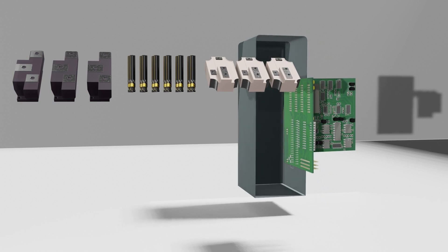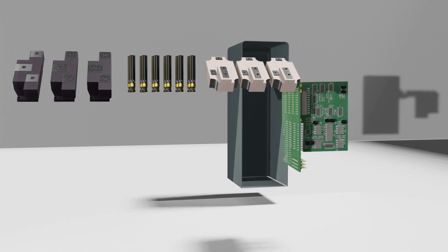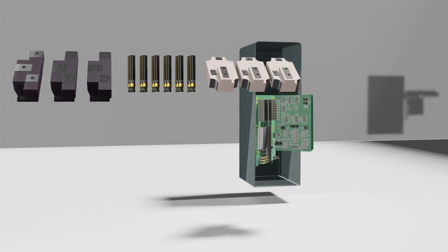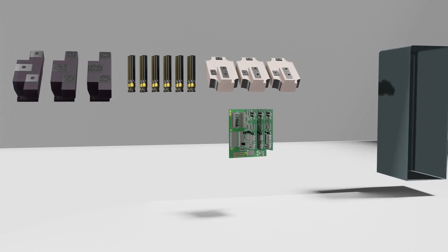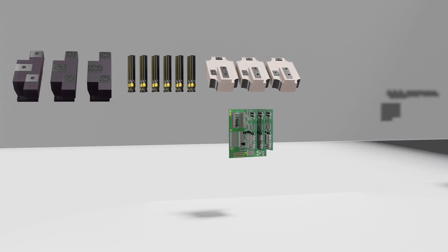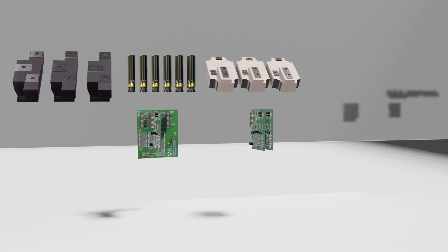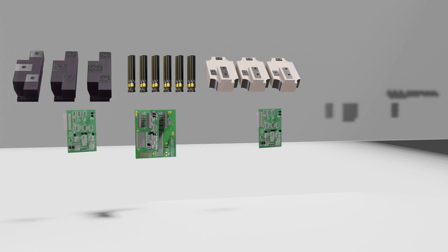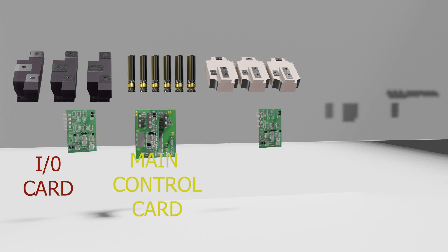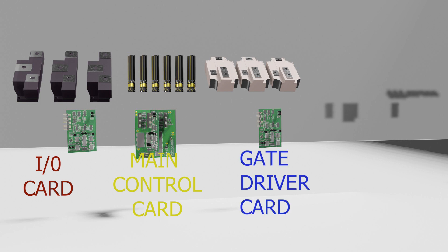But friends, I think now you are thinking about how speed will be controlled. So now let's discuss the main part of the VFD — these are the PCB cards inside the VFD. First, this is the main control card. Then second, the I/O card, means input-output card. And then this is the IGBT gate driver card, which controls the gate triggering of the IGBT.